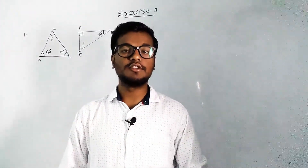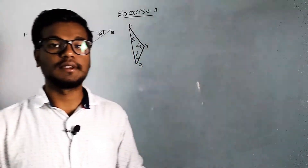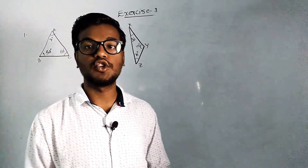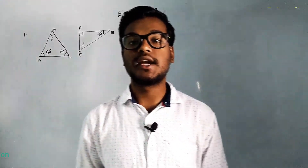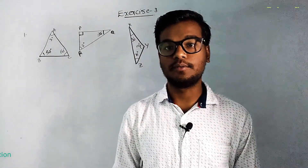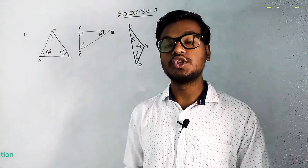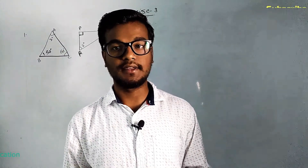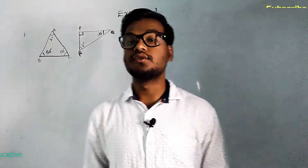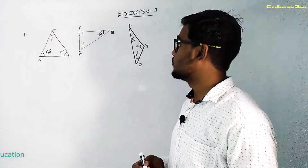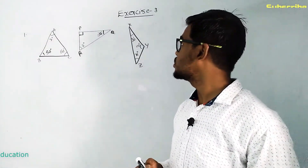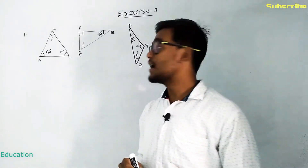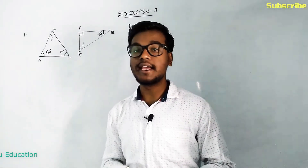In this module we are going to discuss the solutions for the first question in Exercise 3 on triangles and their properties. Here we are given triangle ABC and we need to find the angle X.